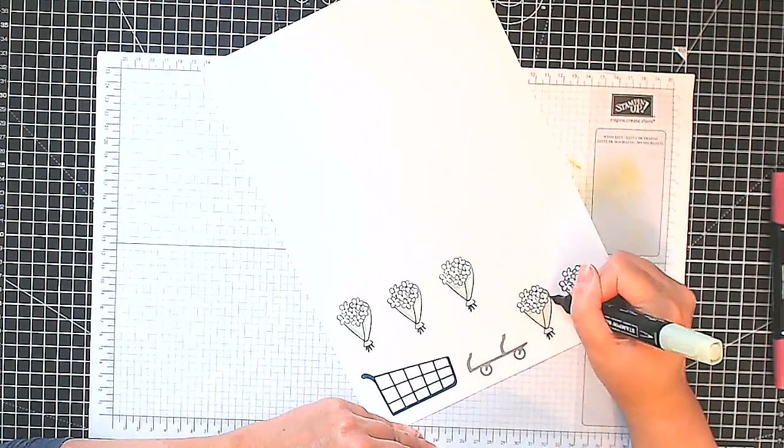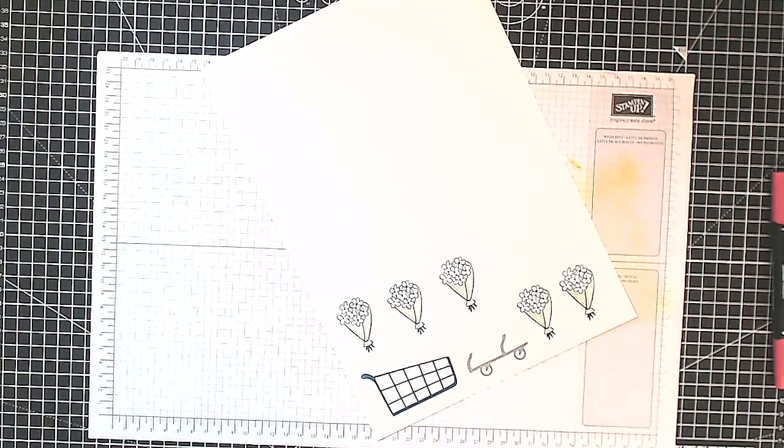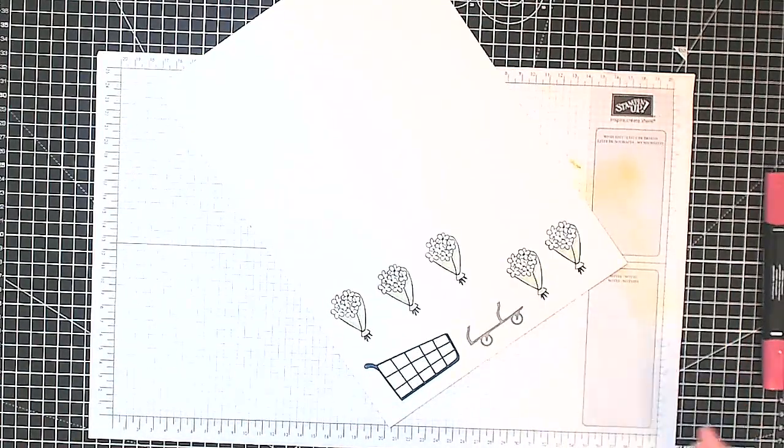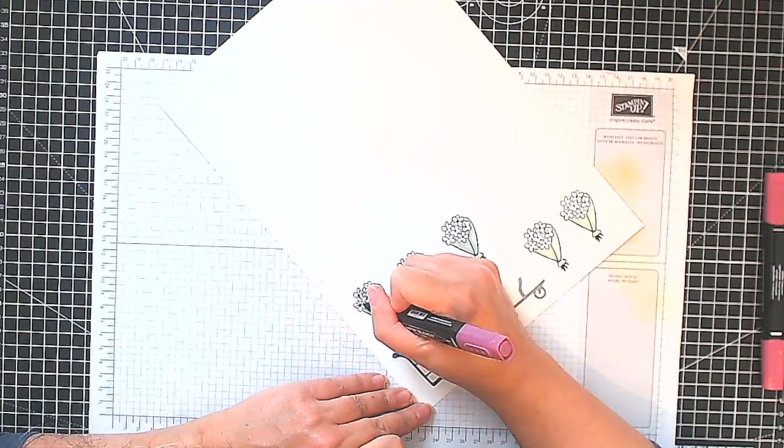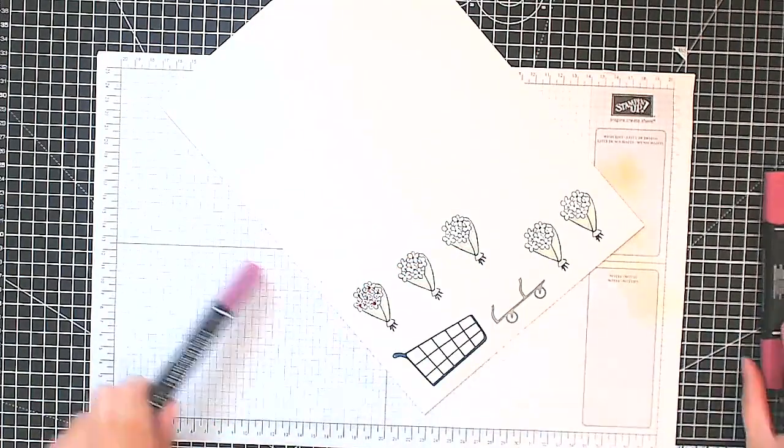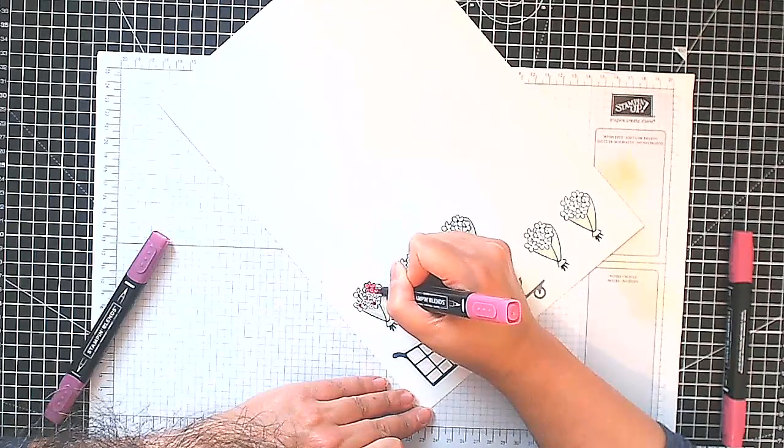I'm just going back in here with the dark color to try and deepen the shadows and make it look a little bit more realistic. Now we're going to use some Berry Burst and again I'm just going with a darker color.